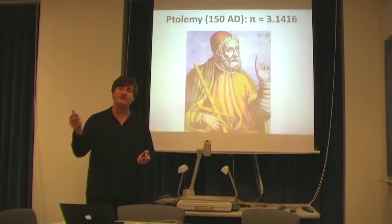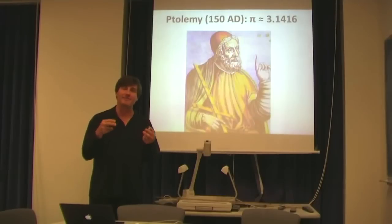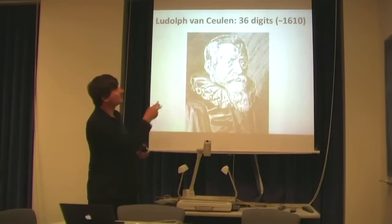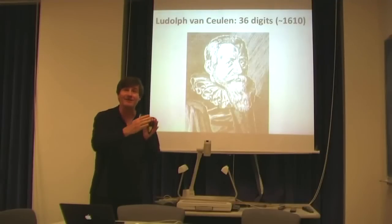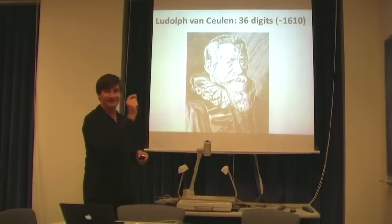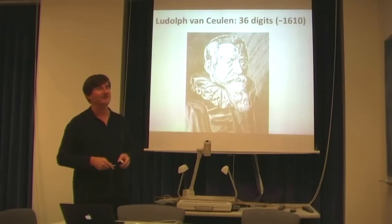And then, in the ensuing centuries, people calculated pi ever more accurately until around 1610, when a German mathematician, Ludolf von Koehlen, calculated pi to 36 digits, including the leading 3. This was quite an achievement to get so many digits in pi.